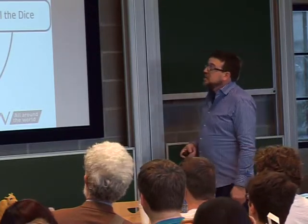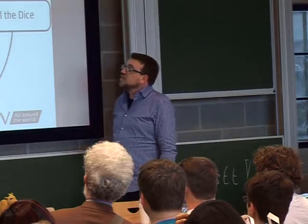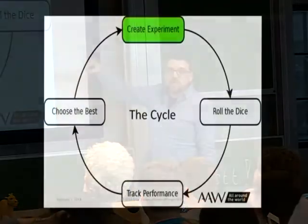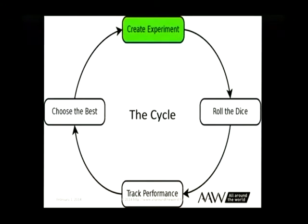Here's the vicious lifecycle of A/B testing, and it never ever stops if you're doing it correctly. You create an experiment — red buttons versus blue buttons, no thumbnails versus some thumbnails, small versus large thumbnails. You then roll the dice every single time a customer comes to see which version they're going to hit. You track their performance over time, and then you choose the best one. Pretty simple.